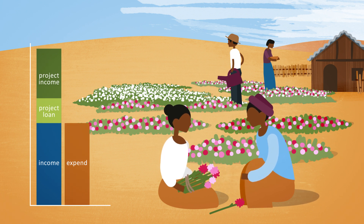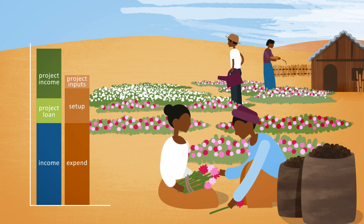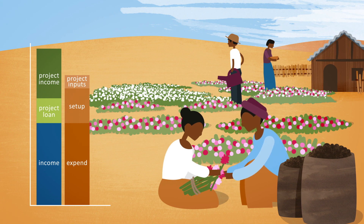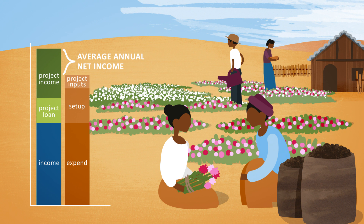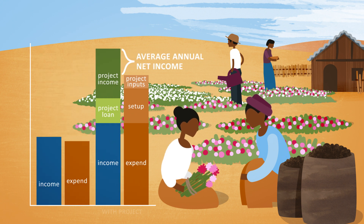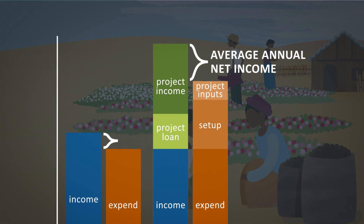There are also expenses required to take part. Households must spend cash on set-up costs and inputs, such as fertilisers. We can then work out the average annual net income of a household benefiting from the project and compare this to the net income of a household with no project at all. In this case, growing flowers would more than double a poor household's annual net income.